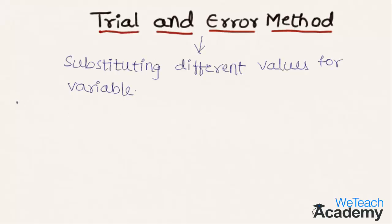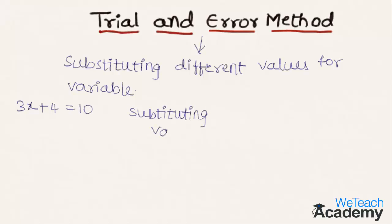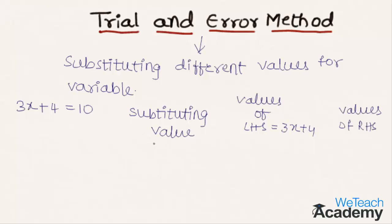Let us consider an example: 3x plus 4 equal to 10. We will solve this example using the trial and error method by substituting different values of x and finding the values of LHS and RHS so that LHS is equal to RHS.